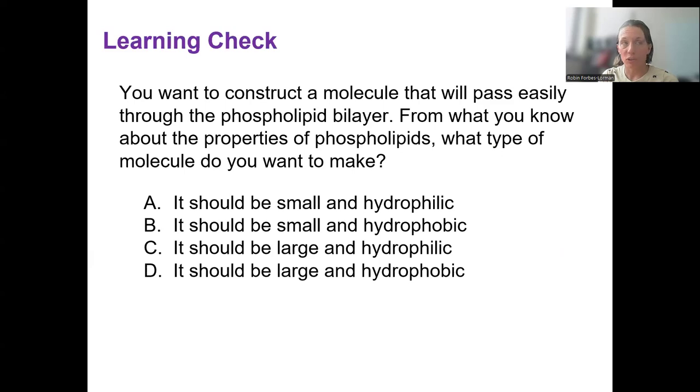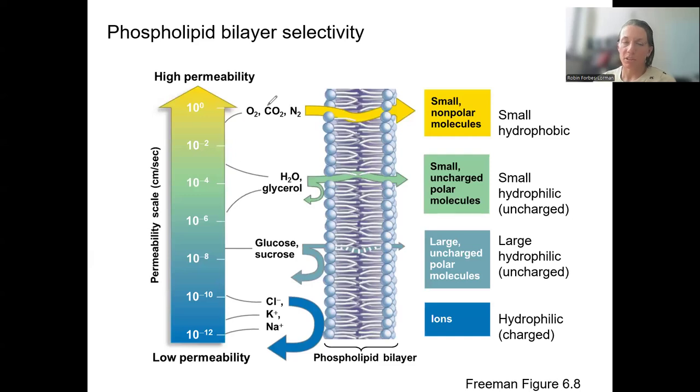Let's do a learning check. Pause if you need to. Remember this image we've seen before. Small hydrophobic molecules are more permeable. The membrane is more permeable to them. They're able to pass through easily. For the molecules that are down here, charged ions, we're going to need a membrane protein, a channel, or a carrier to help it get across.